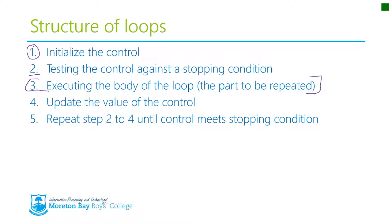Once you've actually done that first time through the body, you then update the value of the control. Then you test, then you repeat steps two to four. So you test the control again. If it hasn't met the stopping condition, you execute the body, then you update the control. You test the control again, execute the body, update the control. It just goes round and around until finally the control meets the stopping condition and you leave.